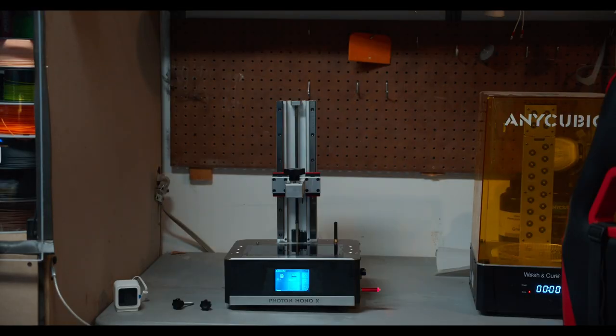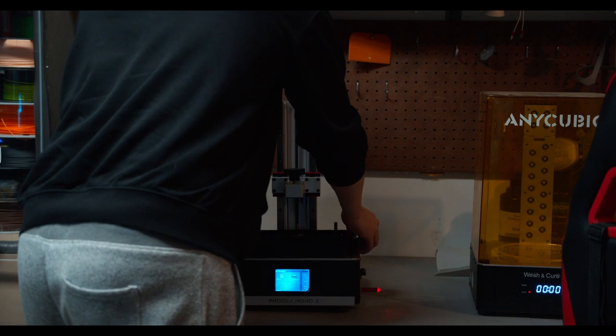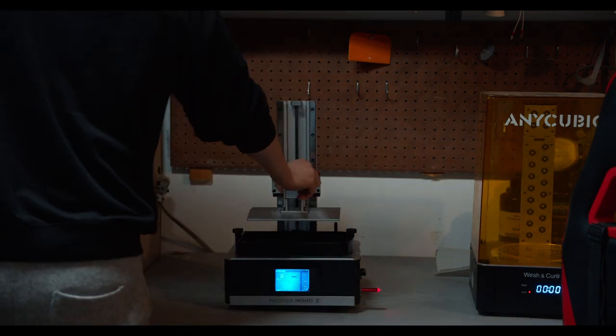These printers have four main parts. The main base, which holds electronics, and the UV light. The LCD screen that acts like a mask. The tub that holds the resin. And the bed which moves up and down.